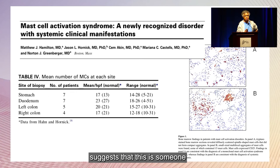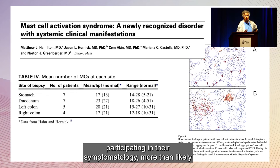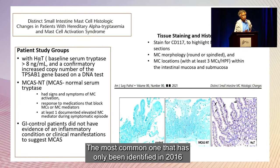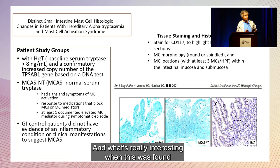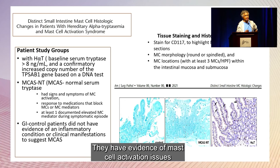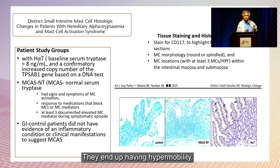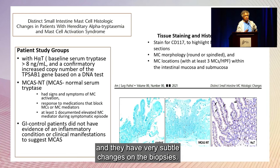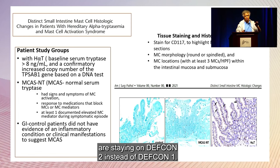Systemic mastocytosis is a mast cell disorder — very rare. Most people with mast cell dysfunction more likely have mast cells being called into action inappropriately. The most common newly identified condition, discovered in 2016, is hereditary alpha-tryptasemia, or HAT. These individuals tend to have three conditions traveling together in variable penetration: mast cell activation issues with flushing, itch, or gastrointestinal distress; hypermobility — sometimes quite symptomatic; and autonomic dysfunction. Biopsies show subtle changes: increased small clusters of mast cells, as if they're staying on DEFCON 2 instead of DEFCON 1.